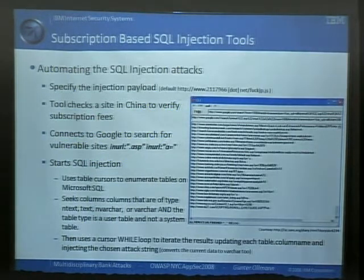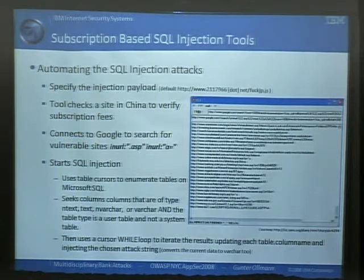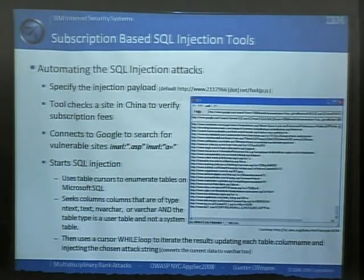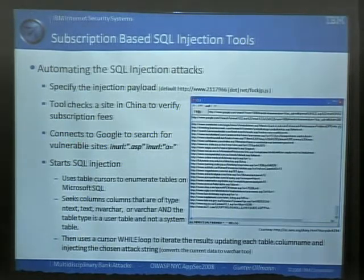This particular tool — you find a new vulnerability in a web application, a new cross-site scripting bug from somewhere. You type it into this tool. It will then tie into Google and pull back all the different sites that are potentially vulnerable to it. You specify a URL where your malware is that you want to install through the iFrame, and click Go. This tool gets up to about 5,000 defacements per minute.